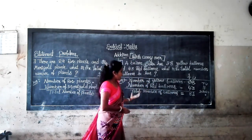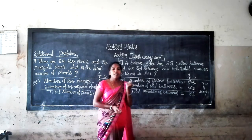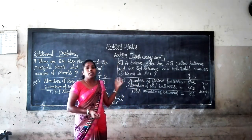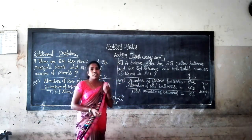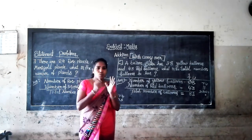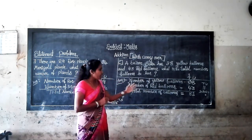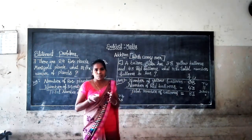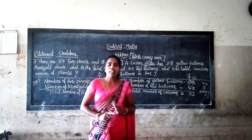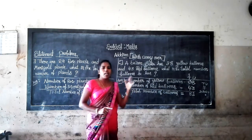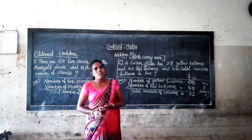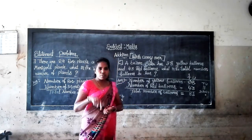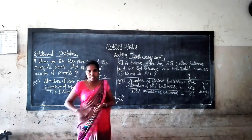He has 81 balloons. So 38 yellow balloons and 43 red balloons — total number of balloons is 81. 81 is also a two-digit number. In 81, there are 8 tens and 1 unit. Let's go to the next example.